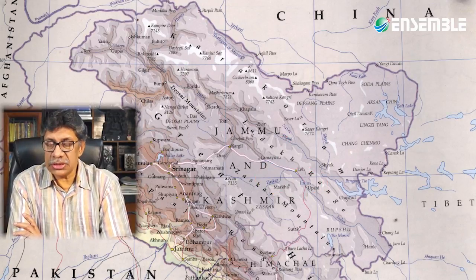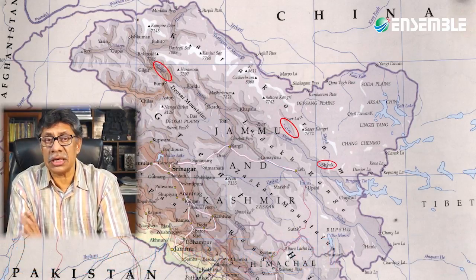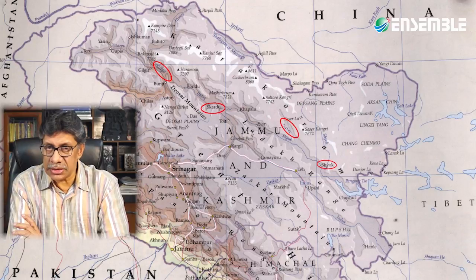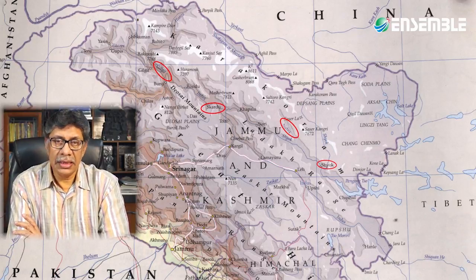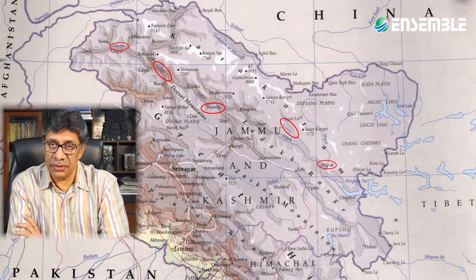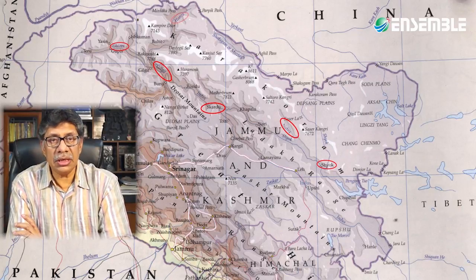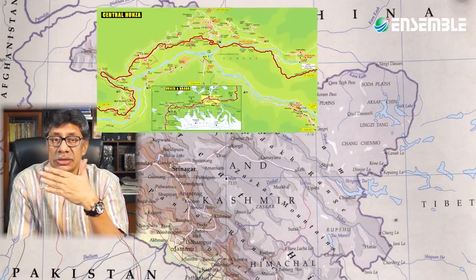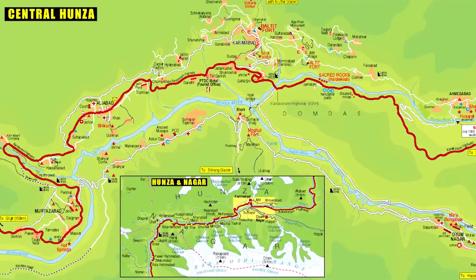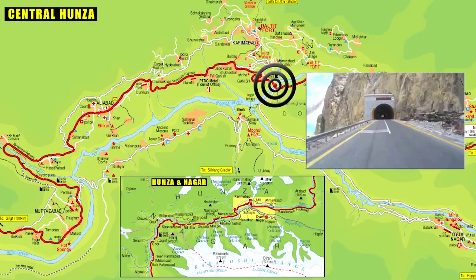The Indus has tributaries such as the Shyok river from Siachen and the Nubra river — whose valley is known for two-humped camels. The Gilgit river, starting from Shandur Lake, joins the Indus at a junction point of three mountain ranges near Gilgit, and is also referred to as the Ghizar river. It is the last tributary of any Indian river in the north. The Hunza river, principal river of Hunza in Gilgit-Baltistan, cuts through the Karakoram range and is crossed by the Karakoram Highway near Hunza and Nagar valleys.